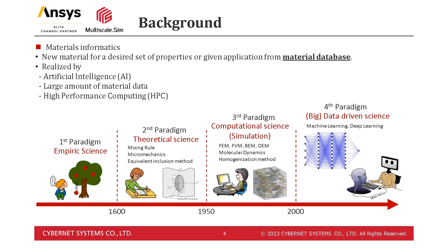Let me give you a brief introduction to materials informatics, which is an important keyword for today's topic. Generally speaking, there have been four major paradigm shifts in the history of industrialization. It was in the second paradigm that theoretical calculations began to be used in a big way. At this point, calculators had not yet appeared, so the analysis objects were extremely simplified and could only be examined at the level of detail that would allow hand calculations.